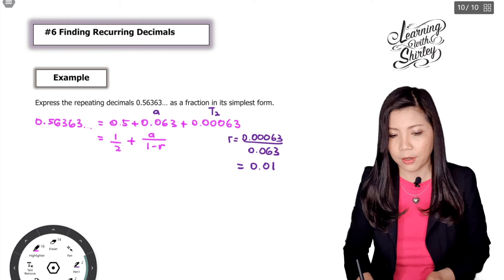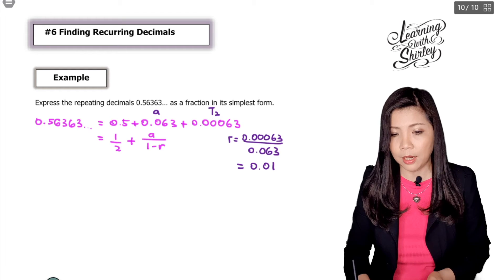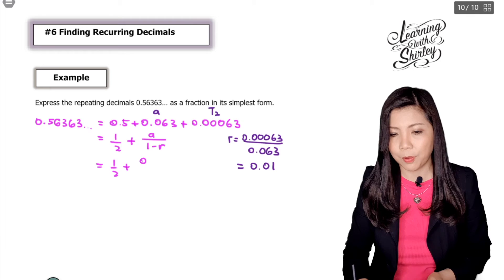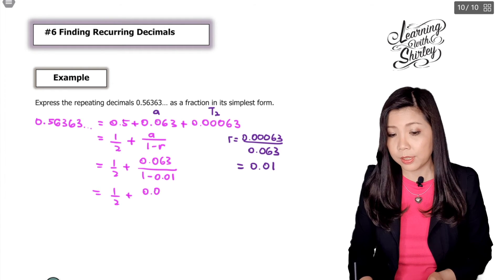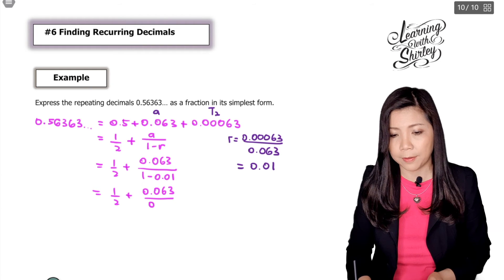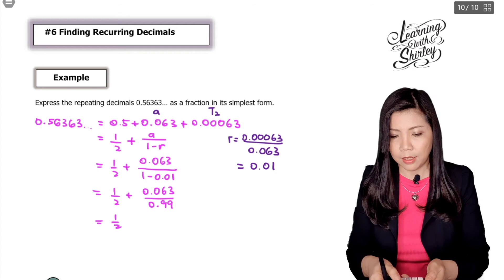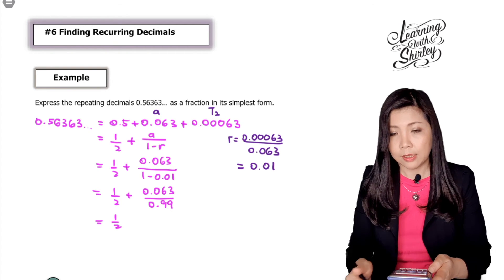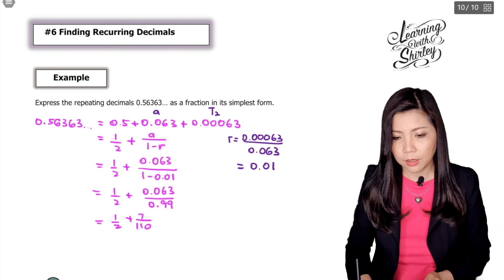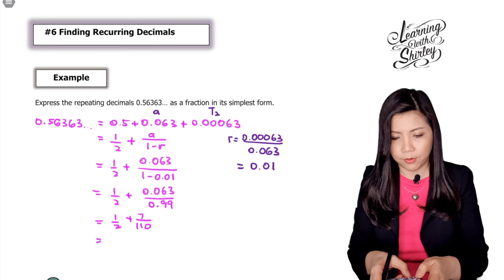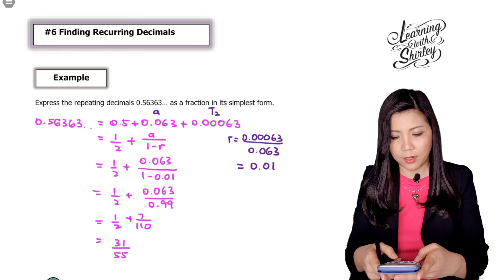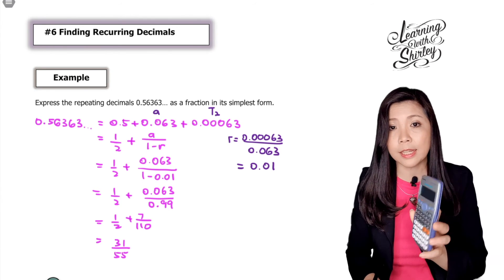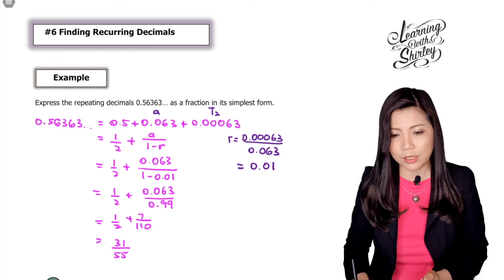Now we have a equals 0.063 and r equals 0.01, so we substitute into the S infinity formula: 1/2 plus 0.063 over (1 minus 0.01), which gives 1/2 plus 0.063 over 0.99. Using the calculator, 0.063 divided by 0.99 equals 7/110. Adding 1/2 plus 7/110 gives 31/55. Checking: 31 divided by 55 equals 0.56363..., confirming the answer is correct. The fraction in simplest form is 31/55.